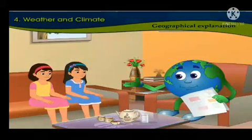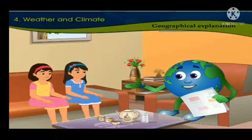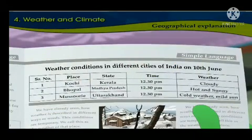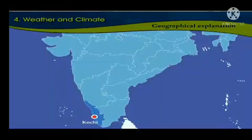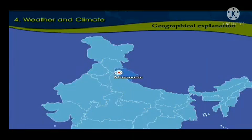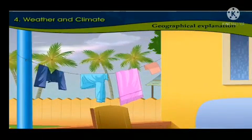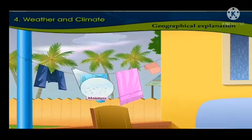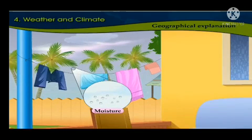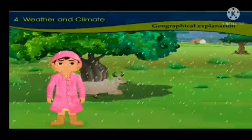Now tell me, at which place would the clothes take more time to dry and why? Absolutely correct. The clothes would take more time to dry in Kochi in Kerala and Mussoorie in Uttarakhand. The weather in Kochi is cloudy and therefore the sunlight here is not sufficient. The monsoon has started, so the moisture content in the air will be high. Therefore, the clothes would take a long time to dry — you must also have experienced this situation at your place during the monsoons.